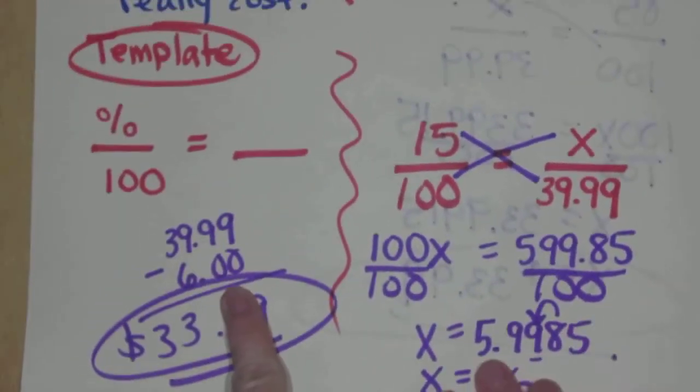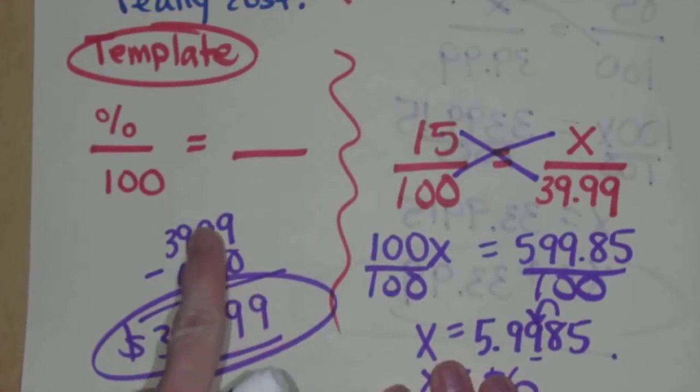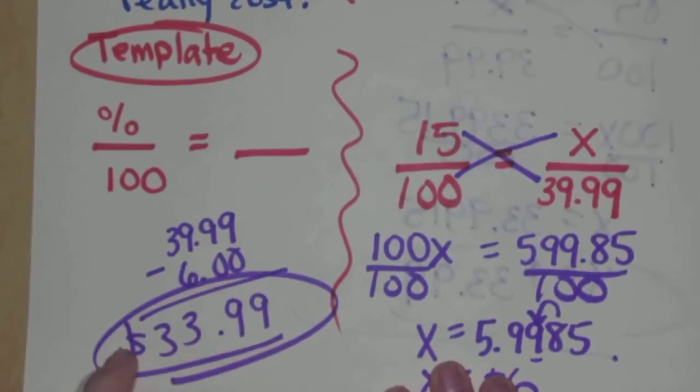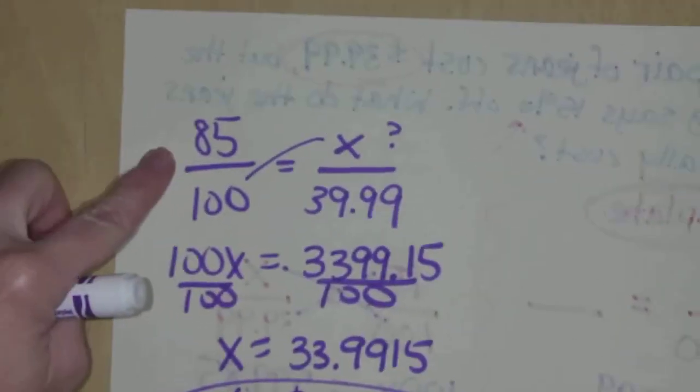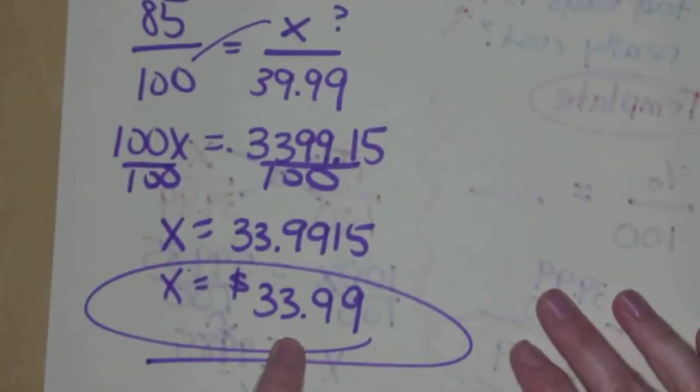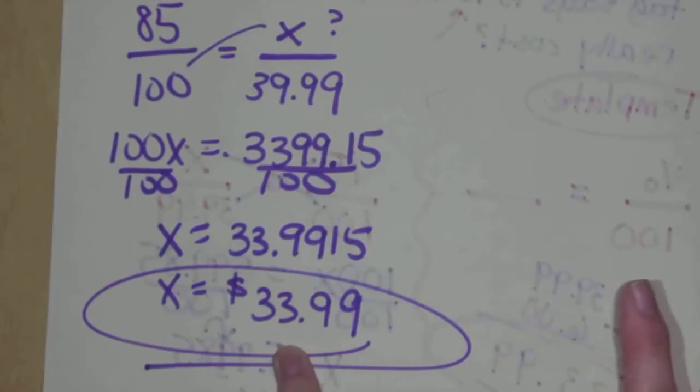Notice, if I do it this way, I do not need that additional subtraction step. I had to first find what 15% off was, and then subtract. That's two steps, where if I just do 85% up here, I get right to the new price. Food for thought.